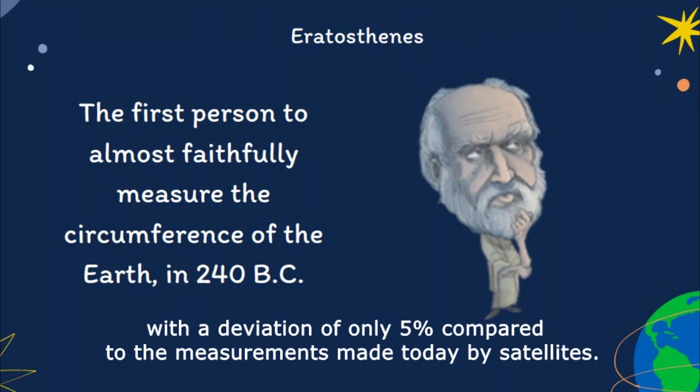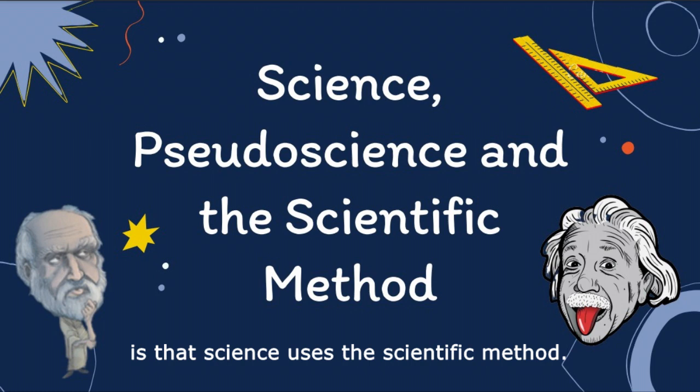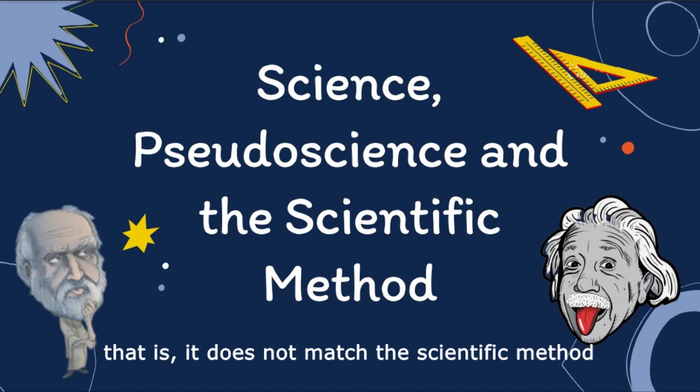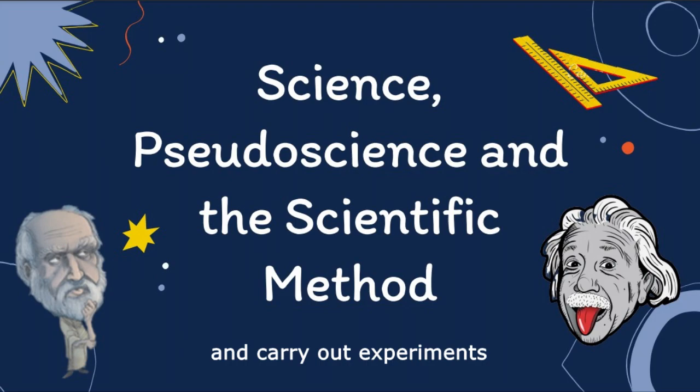The big difference between science and pseudoscience is that science uses the scientific method. Pseudoscience is often guided by popular consensus and unquestionable truths — that is, it does not match the scientific method. It is necessary to observe, question, create hypotheses, and carry out experiments to reach a conclusion and obtain results.